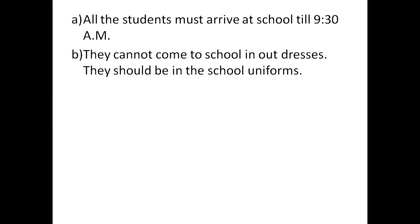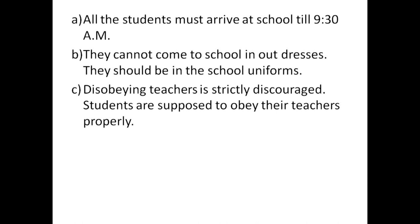Second clue: wear uniform. Rule B: they cannot come to school in outdresses — they should be in their school uniform. Third clue: obey teachers. Rule C: students are strictly discouraged from disobeying teachers, or they are supposed to obey their teachers. In these three sentences we have used different verb structures: must arrive, cannot come, and are strictly discouraged / are supposed to obey.